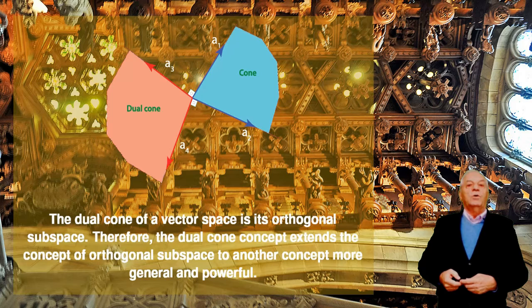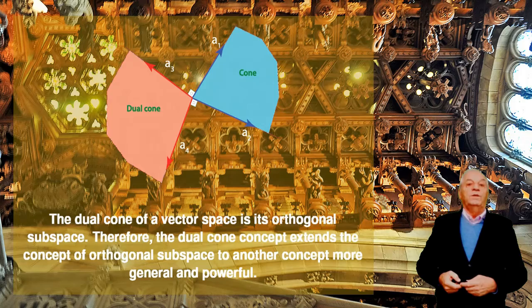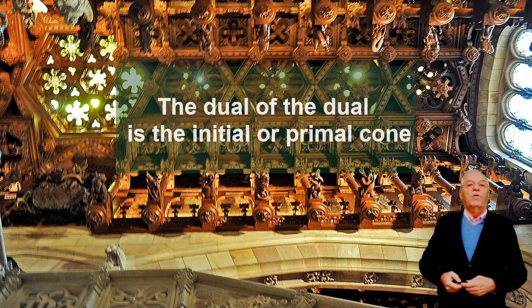All vectors in the pink cone satisfy this condition. Thus, the dual cone of the blue cone is the pink cone in the figure, which has been obtained considering that the limit case occurs when the angle is exactly 90 degrees, that is, when the dot product is zero.